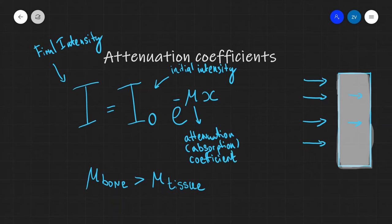X in this equation is simply the thickness of the substance. So this over here is the thickness of the substance.